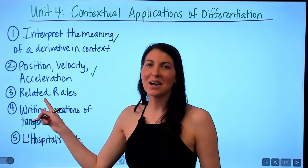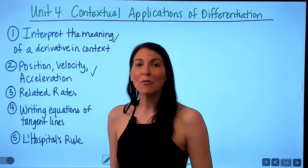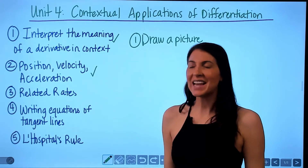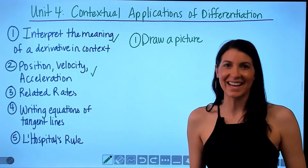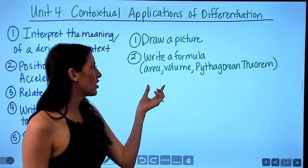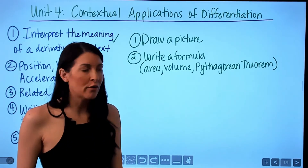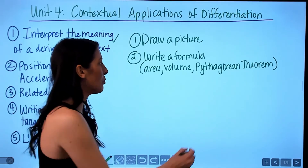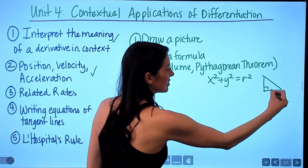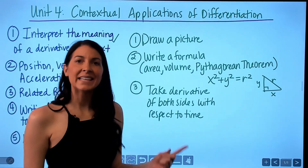Next is related rates, which I consider one of the hardest topics of Unit 4. Here are the steps to follow. First, draw a picture — it's always helpful to see the visual. Second, write a formula relevant to the problem, such as the area of a square, area of a rectangle, volume of a cone, or the Pythagorean theorem: x² + y² = r² if the scenario involves a right triangle.